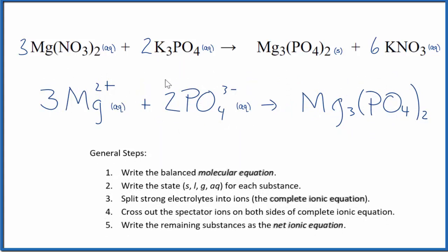You'll note that charge is balanced. Three times two plus, that's six plus. And then two times three minus, that's six minus. So that all adds up to zero net charge of zero. This is neutral net charge of zero. If you count the atoms up, they're balanced too.